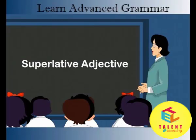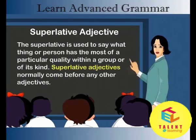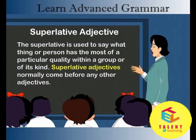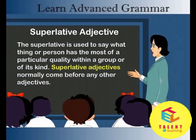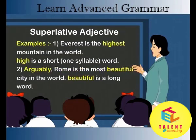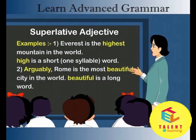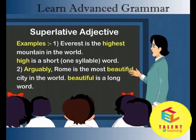Superlative adjective. The superlative is used to say what thing or person has the most of a particular quality within a group or of its kind. Superlative adjectives normally come before any other adjectives. Examples: 1. Everest is the highest mountain in the world — high is a short, one-syllable word. 2. Arguably, Rome is the most beautiful city in the world.